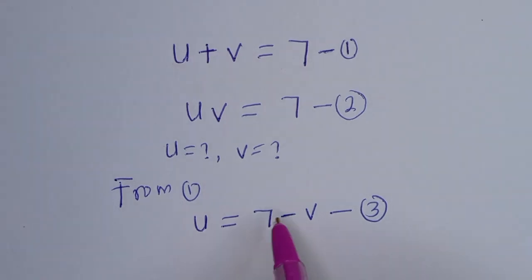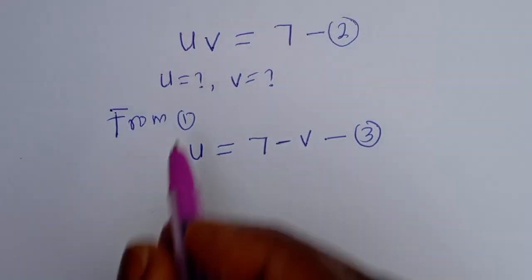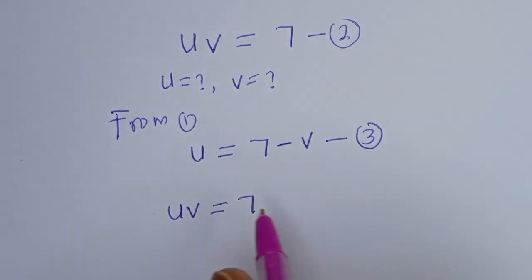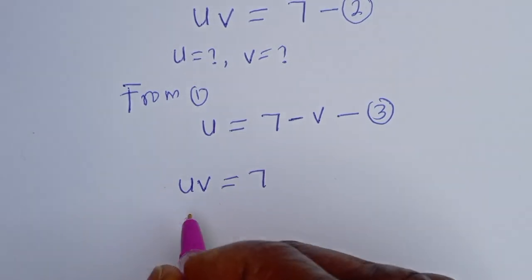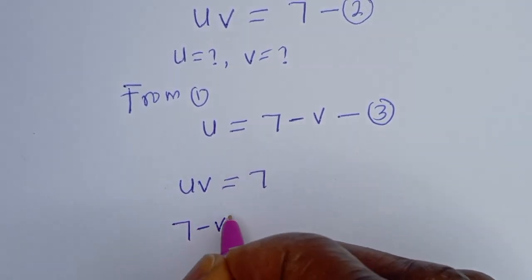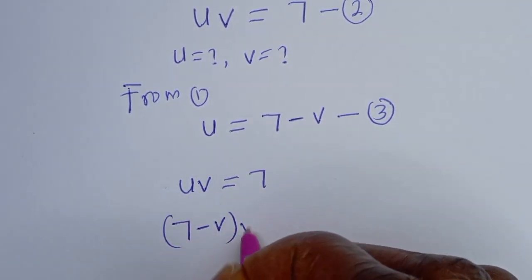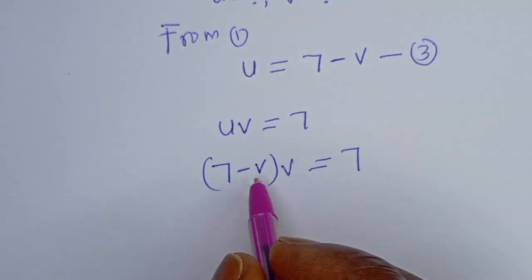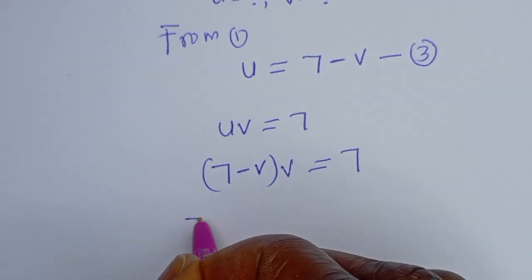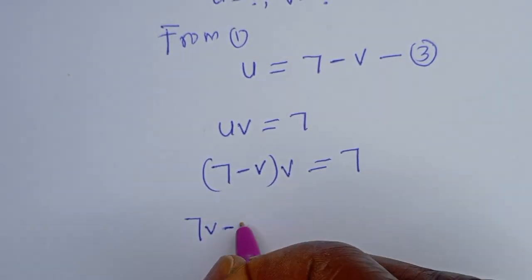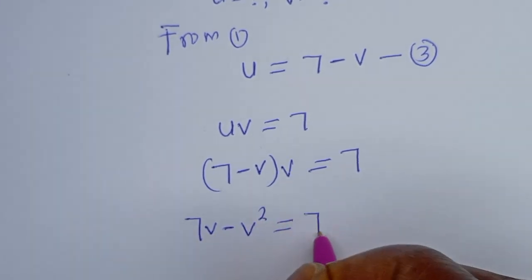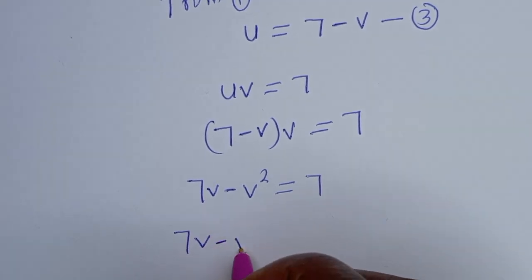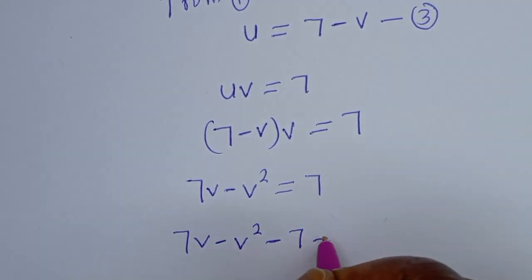Then we can now substitute equation 3 into our equation 2. Equation 2 is uv is equal to 7. When u is equal to 7 minus v, we have (7 minus v) times v is equal to 7. Opening the bracket: 7v minus v squared is equal to 7.